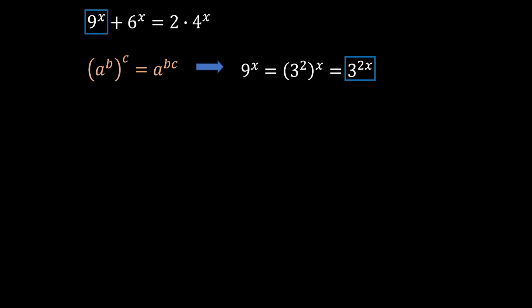We can do exactly the same thing for our third term, 4 to the power of x. If we apply this rule, we can simplify 4 as 2 squared, and we will get that the result is 2 to the power of 2x.